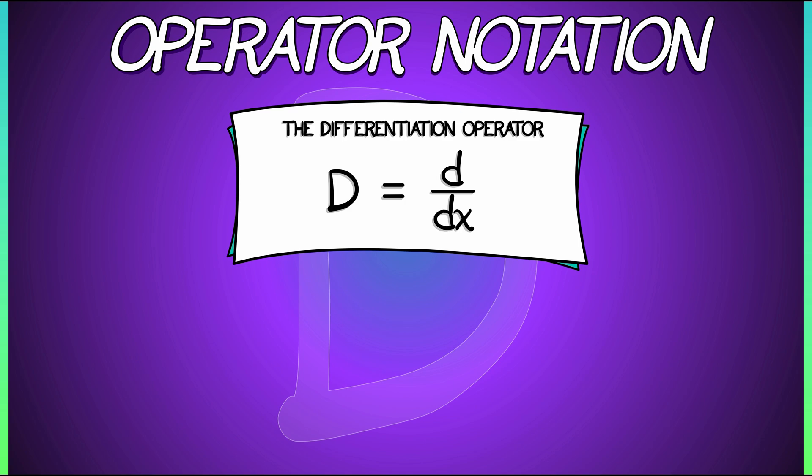Now, what do I mean when I say that this is an operator? Well, an operator is really a function on functions. This differentiation operator takes in a function f of x and returns another function f prime of x. It's not giving you a number at a specific point. It is giving you a function. Now, this is notation, but it's very convenient notation for working with higher derivatives.